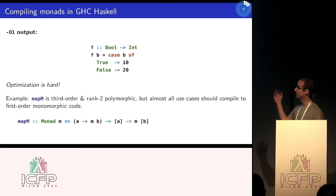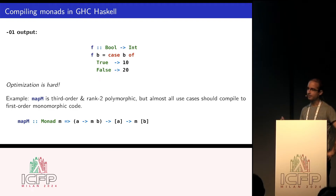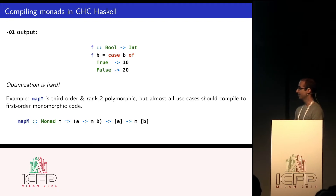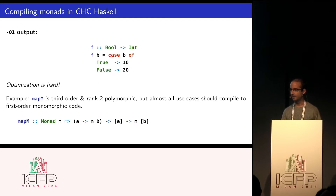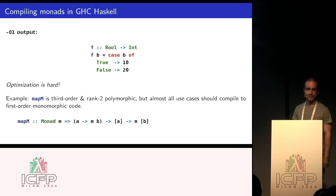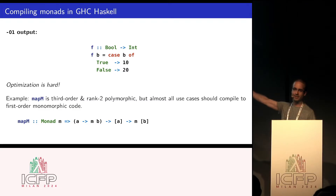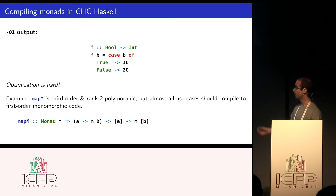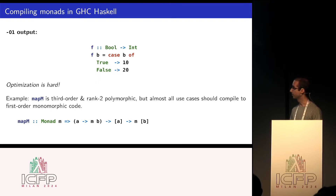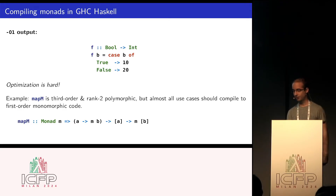Fortunately, what we get from GHC if we do use optimizations is just the code that we really want. But this optimization is generally very hard. If you look at something like just a usual mapm function, it's actually a third-order and rank-2 polymorphic function, because it gets a monad instance as an argument which itself has a polymorphic higher-order function on the inside. So if you want to compile this efficiently, almost all use cases should compile to first-order monomorphic code, but what we start with is third-order rank-2 polymorphic code.